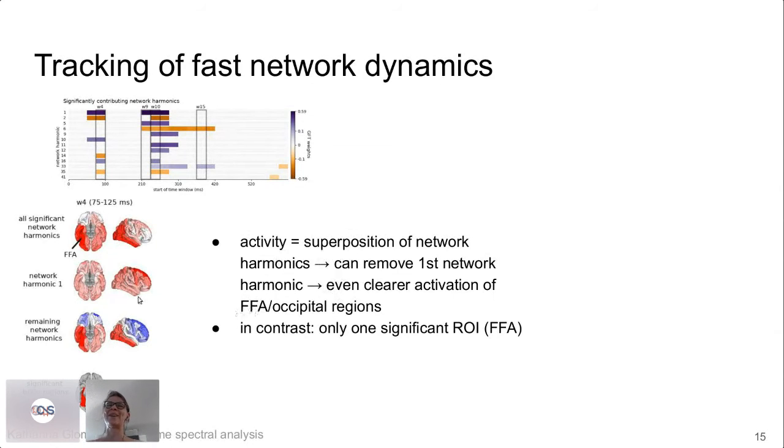In the early time interval, when you look at the superposition of all significant networks, you see this fusiform face area here in the right hemisphere, which is exactly what is known from the literature. And something that is very cool when you use this framework is that it's a superposition of networks, so you can look at the different networks that are active at any point in time. For example, we know that network harmonic one is just kind of a global signal that reflects the degree, so the connectedness of each node. If you remove this overall increase in activity due to the stimulus, then the remaining network harmonics give you an even clearer picture of what is happening.